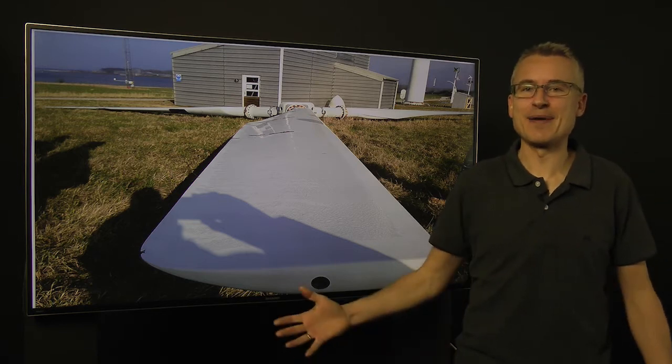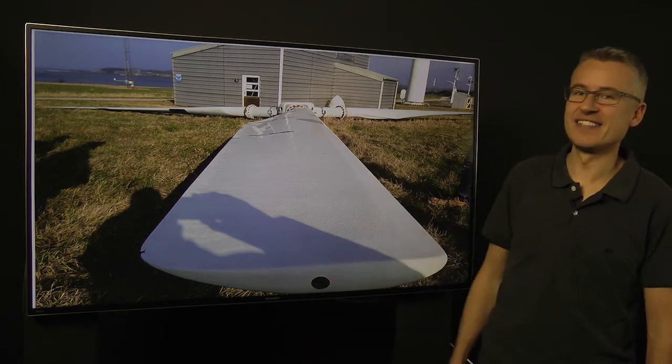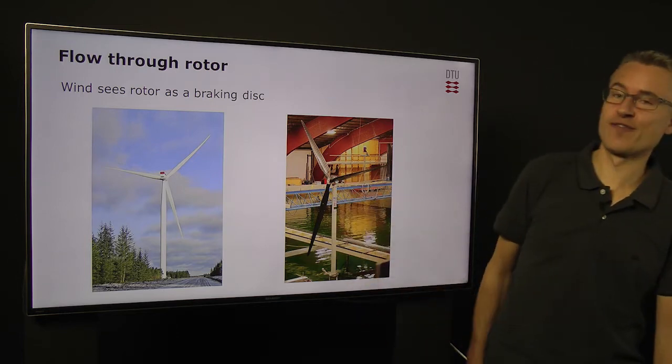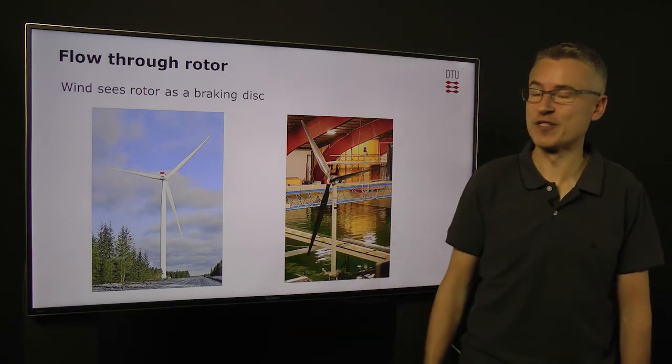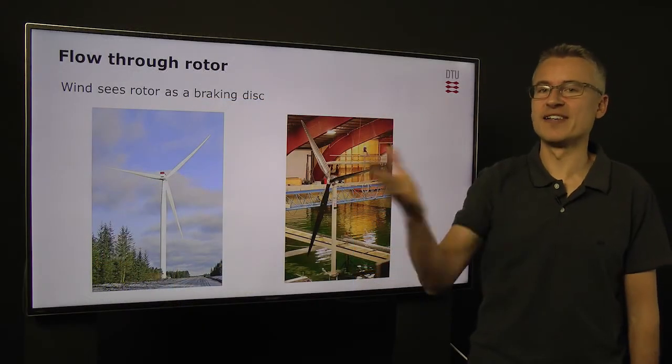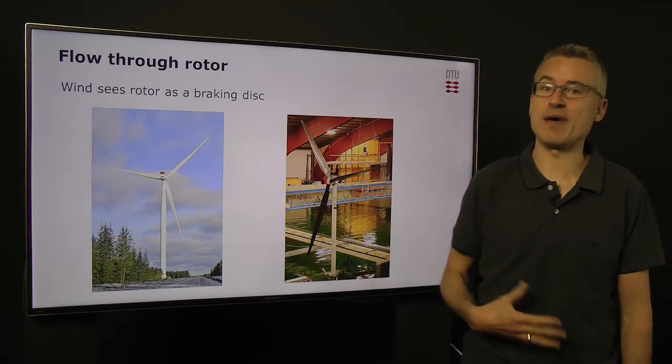Rotors come in many shapes. This is an old one from the 80's. This one here is a modern one. This one here is a specialized one for experiments with floating wind turbines. The role of these rotors is to stop the wind, not fully, but enough to take out some kinetic energy, which can then go into the power.